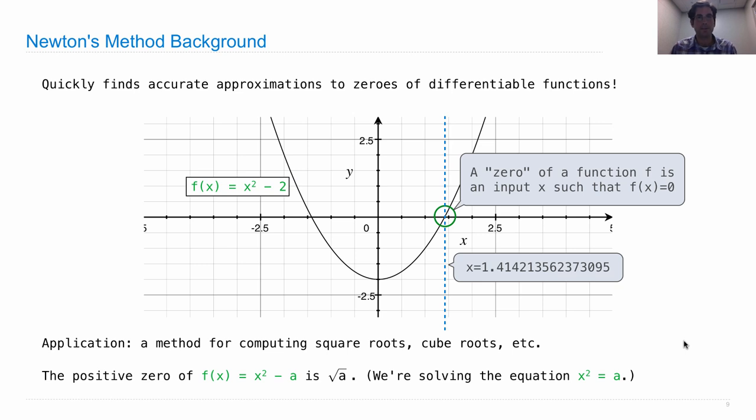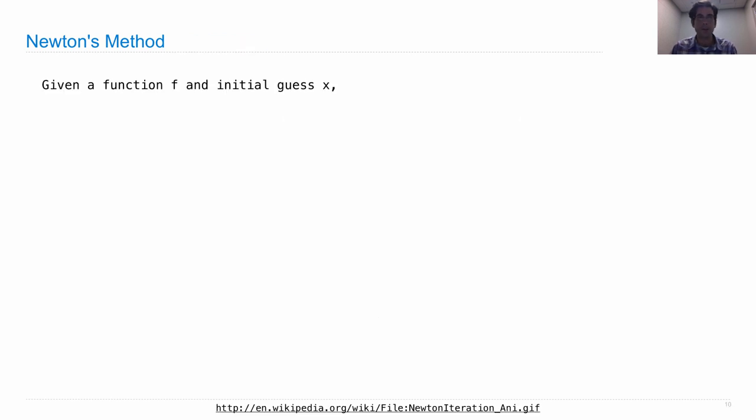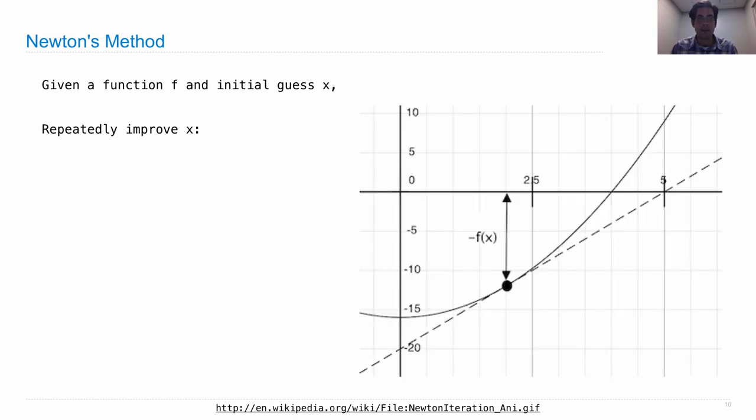How do we do it? Quite procedural. We start with a function and an initial guess as to where the zero is. And we're going to repeatedly improve that guess x in three steps.